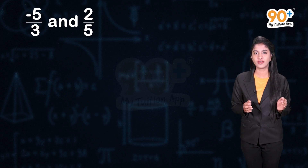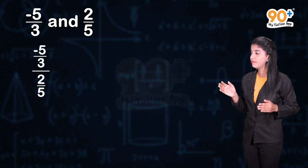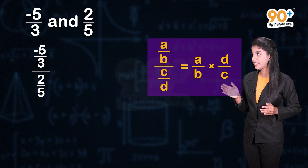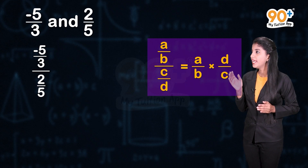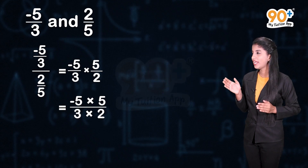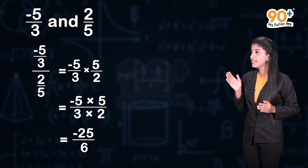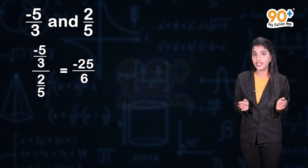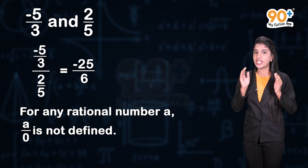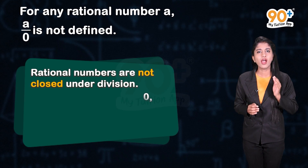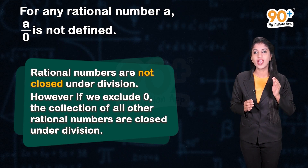Next, let us take two more rational numbers: minus 5 divided by 3 and 2 divided by 5. Can you tell me what is minus 5 by 3 divided by 2 by 5? We know that a by b divided by c by d equals a by b into d by c. So we get minus 5 divided by 3 into 5 divided by 2, which equals minus 25 divided by 6, which is a rational number. However, can we say rational numbers are closed under division? No, because for any rational number a, a divided by 0 is not defined. Hence, rational numbers are not closed under division. However, if we exclude 0, the collection of all other rational numbers is closed under division.